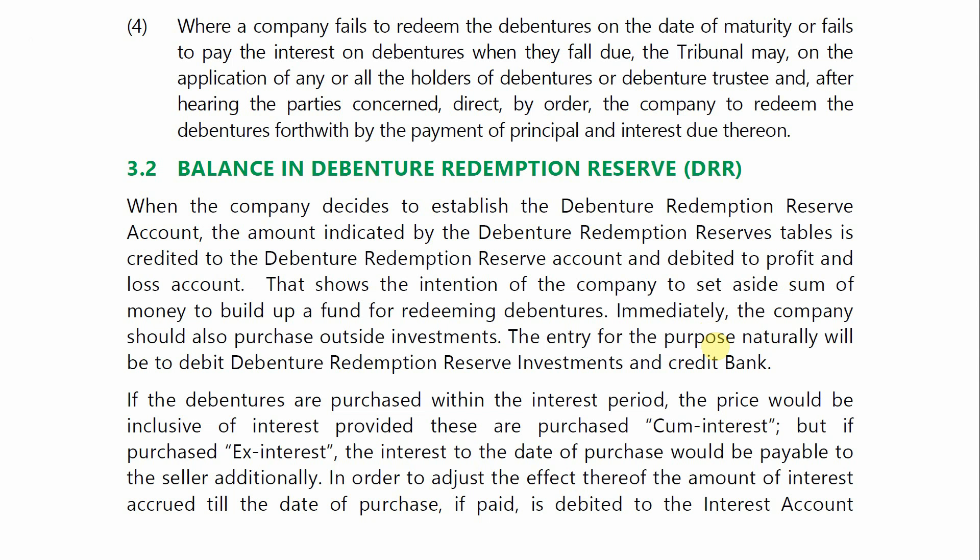When the company decides to establish the debenture redemption reserves account, the amount indicated by the debenture redemption reserves table is credited to the debenture redemption reserves account and debited to the profit and loss account. When we create the DRR account, there is no amount on the credit side.